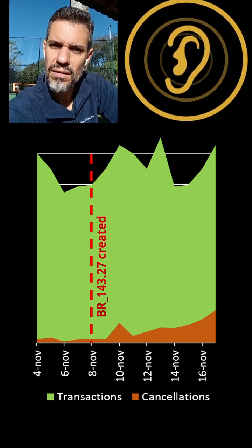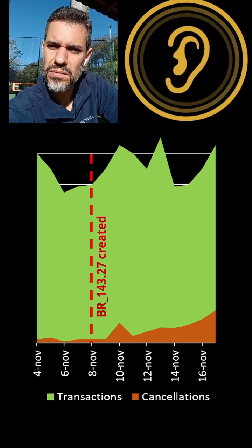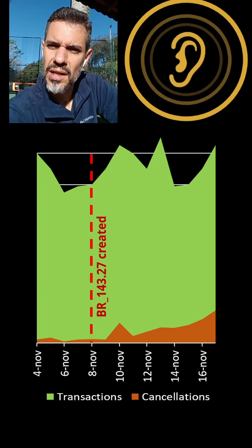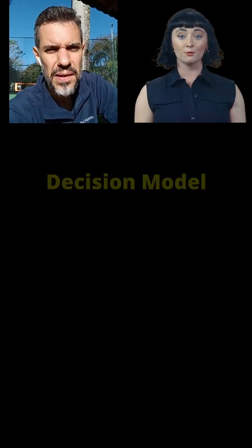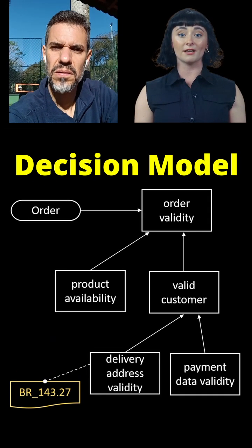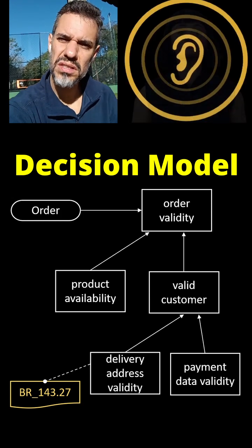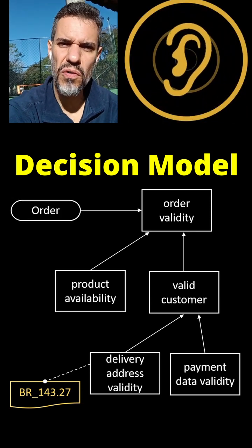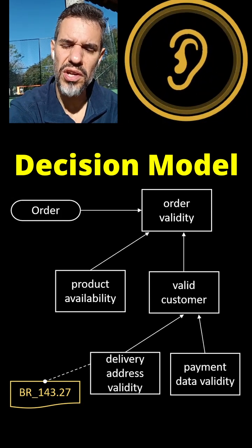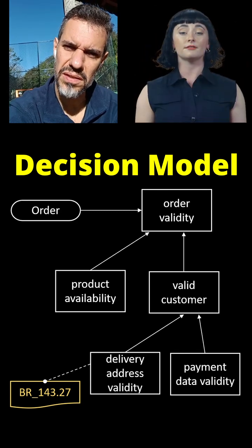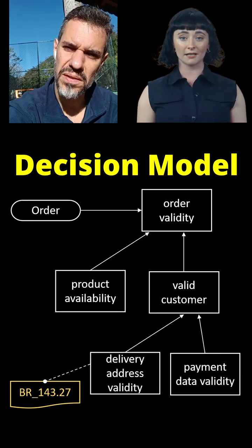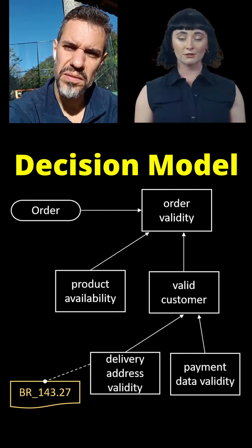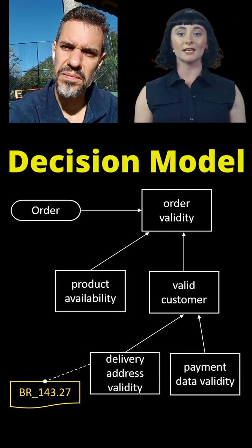It sounds related. Why was this rule created? This rule was created to avoid operation costs. How can proof of address avoid costs? Here is the video of the operations manager requesting this change.